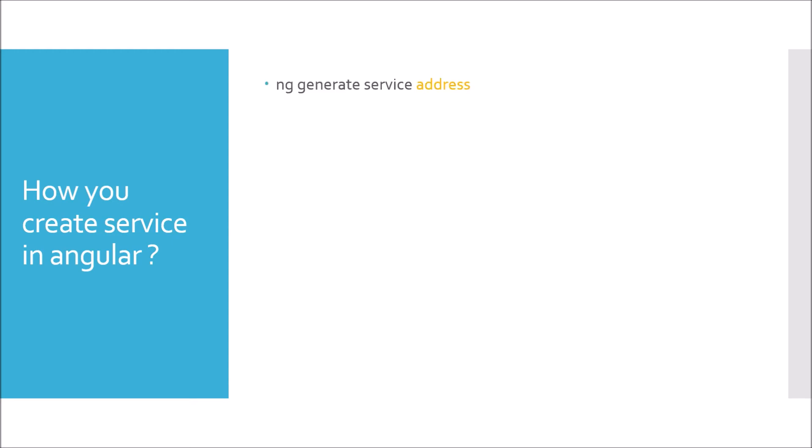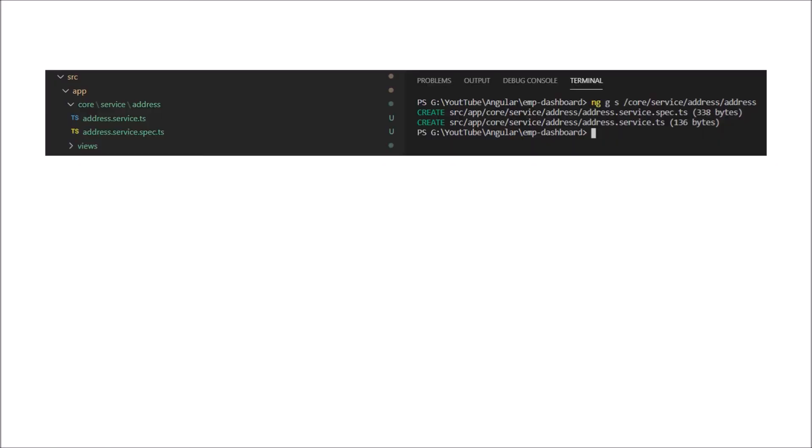Next question: how do you create a service in Angular? You fire ng generate service address, or in short form ng g s address, where address is the service name. In the example shown, I fired ng g s and placed the address service in a specific folder structure: core/service/address. An important difference from component creation: when you create a service, app.module.ts is NOT updated, whereas creating a component does update app.module.ts.